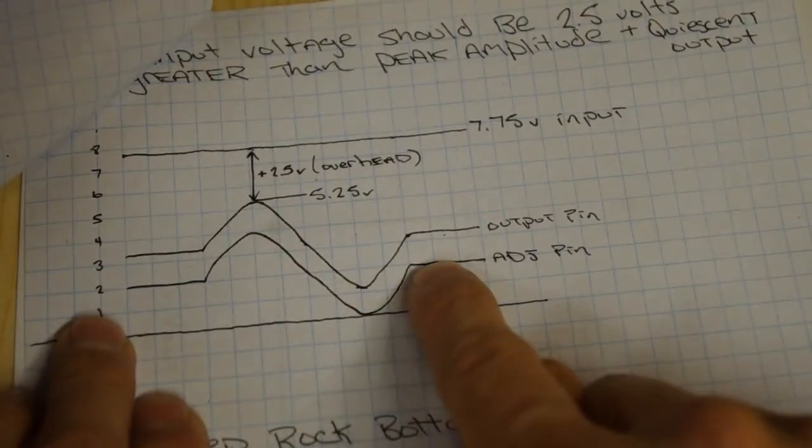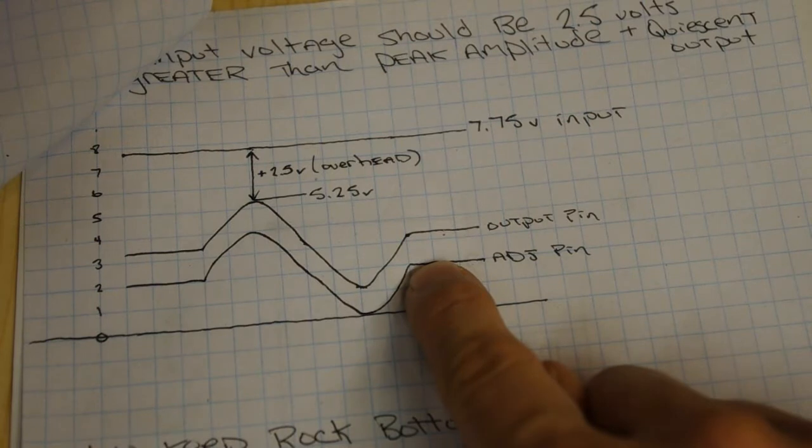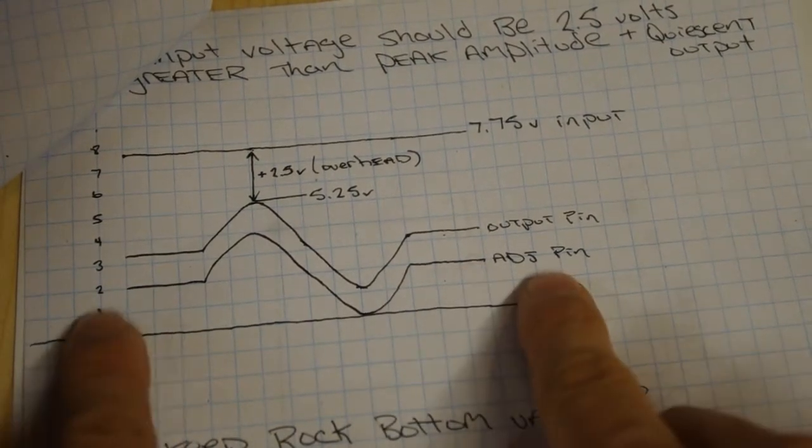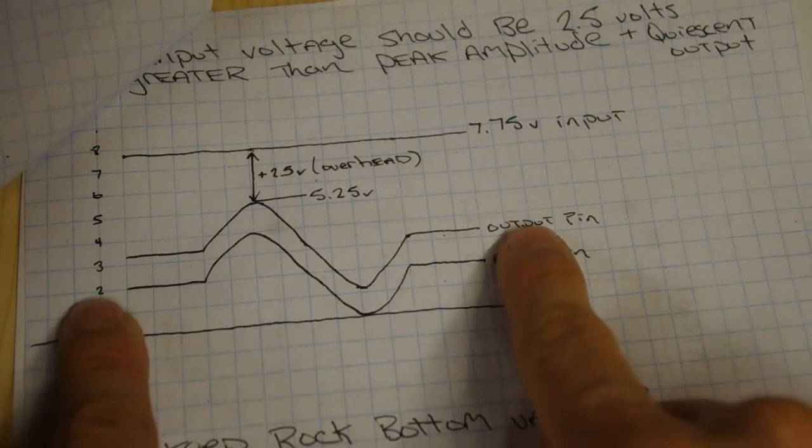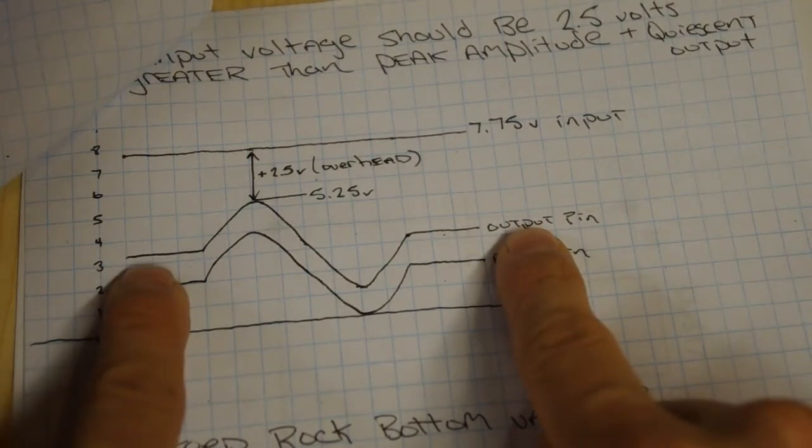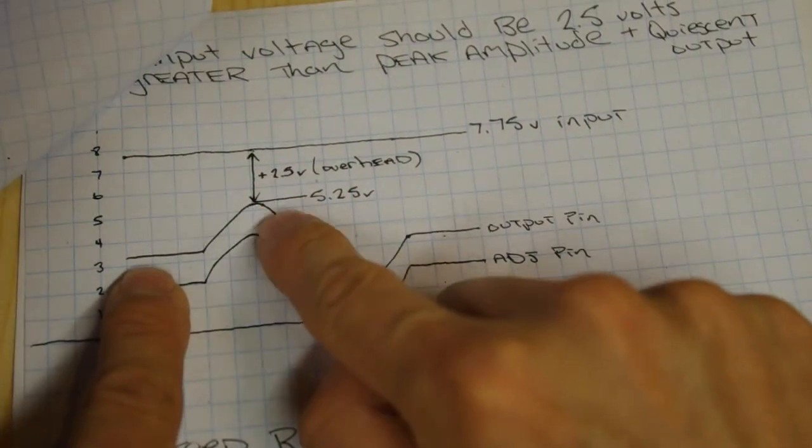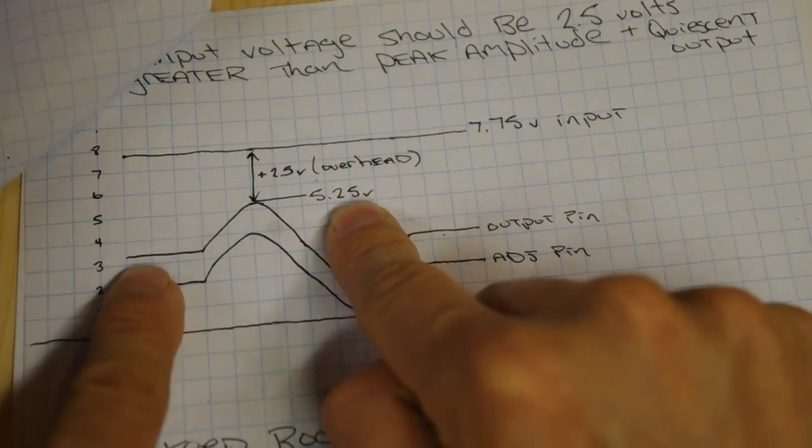So here we're at rest, here's the audio signal applied, just one sine wave, and then back at rest again. Adjust pins at 2 volts, the output leads it by 1.2 volts, so our maximum peak is going to be 5.25 volts coming from your output.